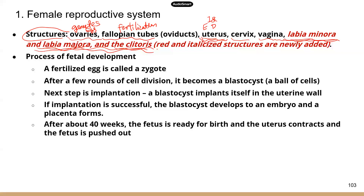Next, I want to go over the process of fetal development. As I mentioned earlier, this is something really new in TEAS 7, so be familiar with the different steps in this process. We're going to start off with a fertilized egg. Fertilization takes place when the egg and the sperm are fused — they merge and become one cell. Their genetic materials are merged too.